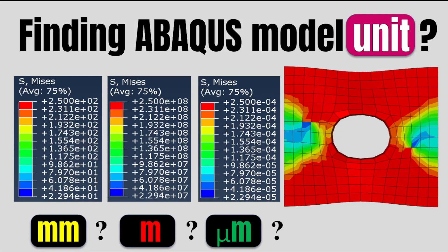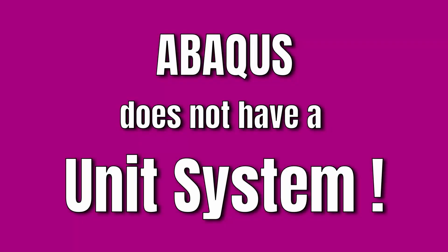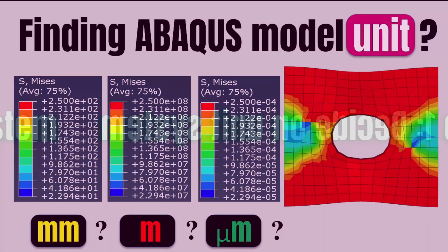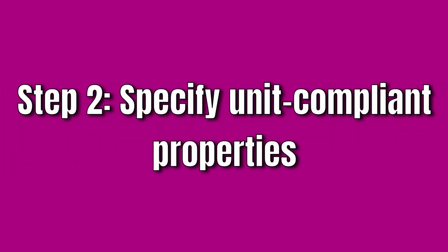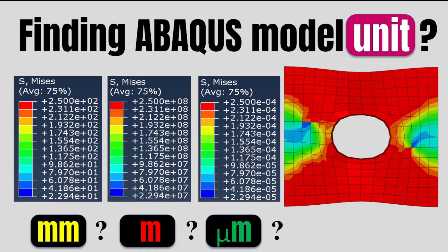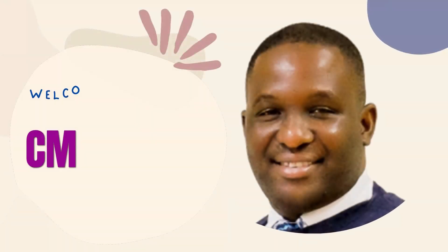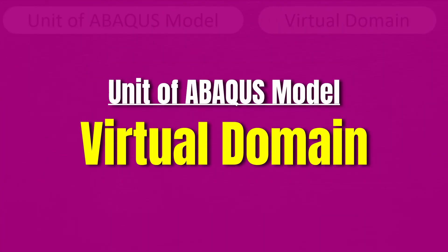The purpose of this video is to help you find the right unit system for an Abacus model. This is mainly because Abacus as a software doesn't really have a prescribed unit system, so in order to specify a model correctly you need to decide on the right unit system that you want to use, specify the properties effectively, and ultimately get the right result.